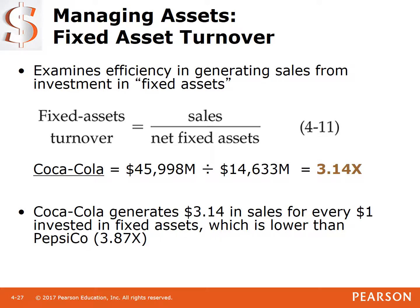Fixed asset turnover — fixed assets are another term for plant assets or plant and equipment on the balance sheet. We measure how much sales are generated from plant or fixed assets: $45,998 million divided by $14,633 million in net plant and equipment equals 3.14. So we generate $3.14 in sales for every $1 invested in plant and equipment assets. This is lower than PepsiCo.